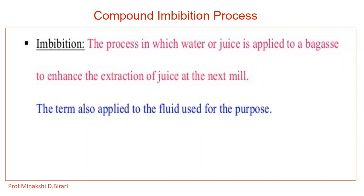The bagasse contains about 1% unextracted sugar, woody fiber, and 40–50% water. This usually goes to the boilers as fuel. Many factories purchase bagasse for making wallboard, paper manufacture, insulating material, hardboard, cattle blending, bedding, etc.